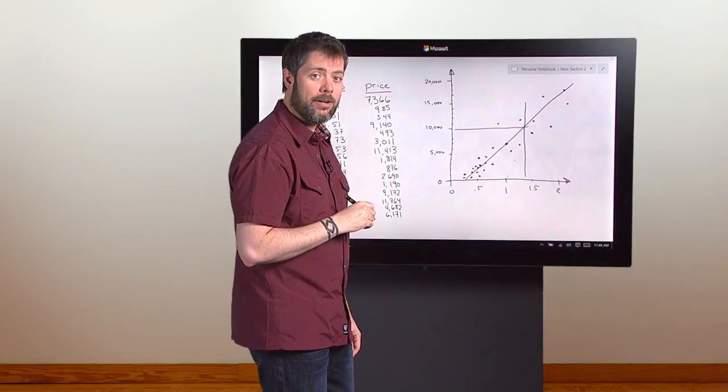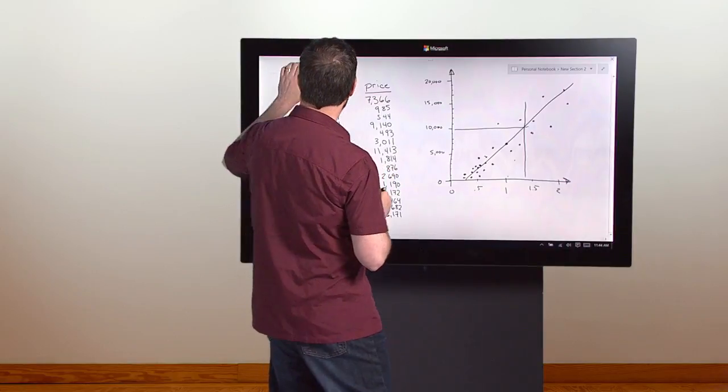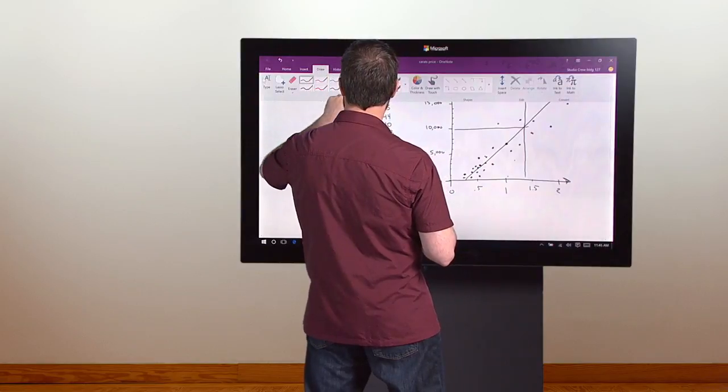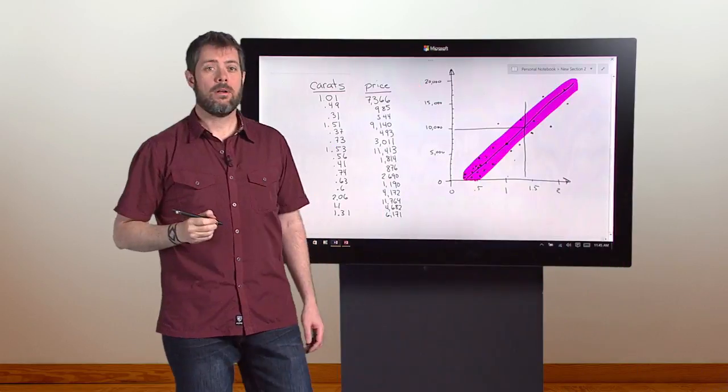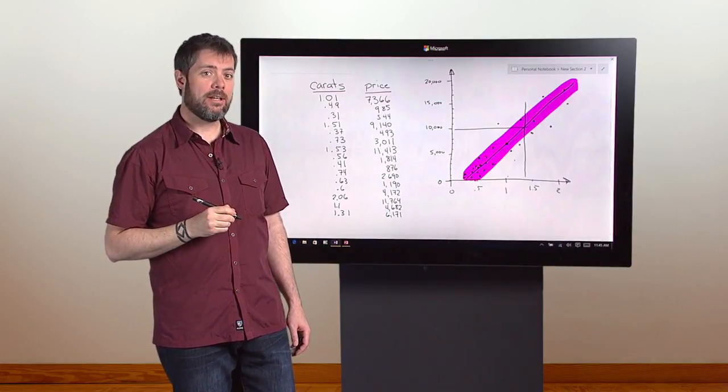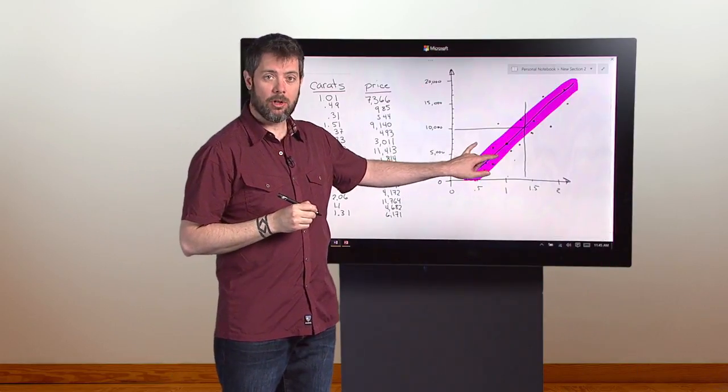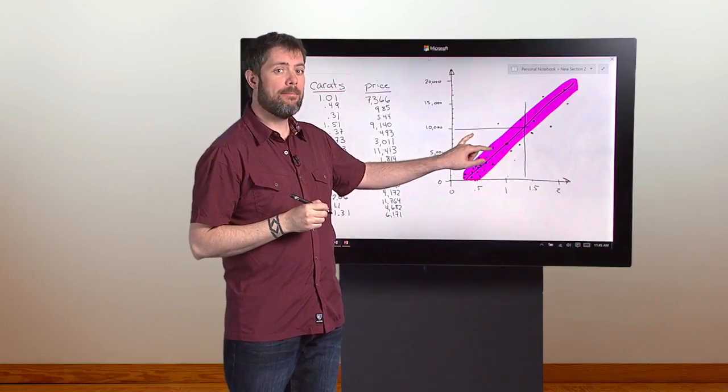This envelope is called our confidence interval. We are pretty confident that prices fall within this envelope, because in the past, most of them have.